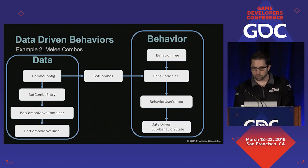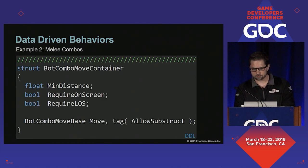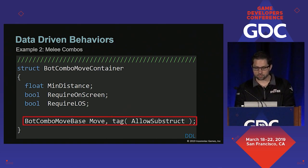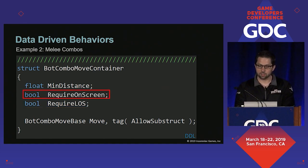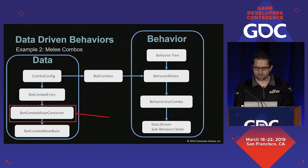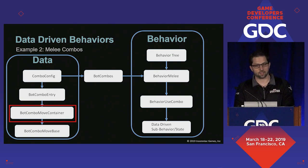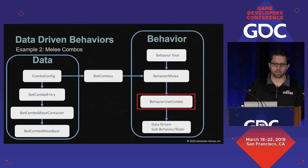Let's move one level up the data hierarchy and talk about the move container. Here's the definition for bot combo move container. You can see the combo move here at the bottom, but this struct contains other data — parameters for defining how to prepare to execute the move. These are things like: does the bot need line of sight with their target to perform the attack? Does the bot need to be on screen? Or how close does the bot need to be? In other words, the combo move container contains not only the combo move, but also has data that drives the behavior of behavior use combo.